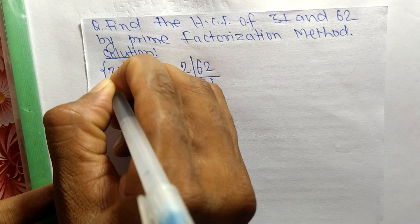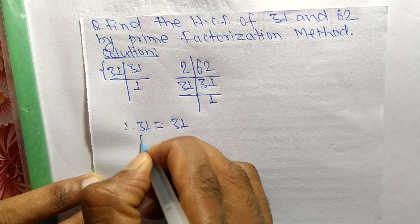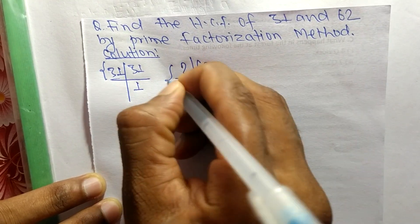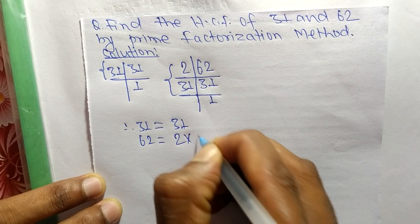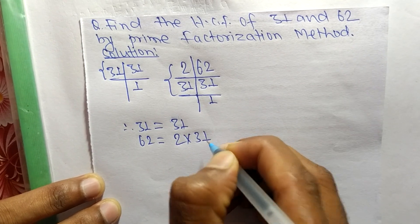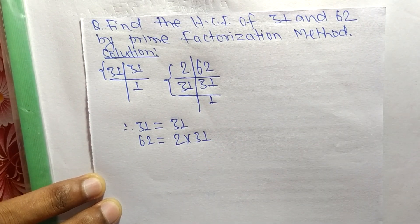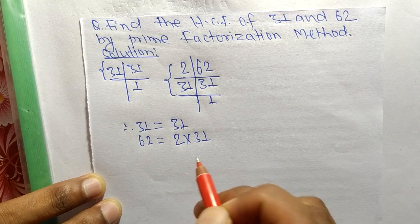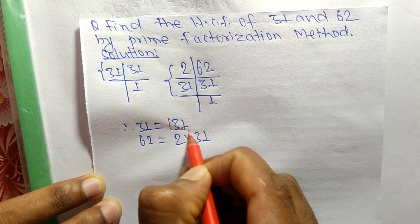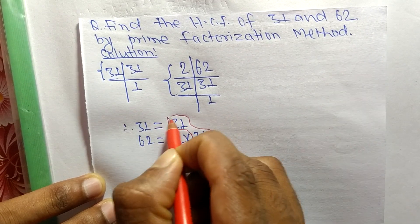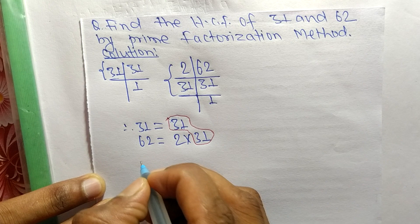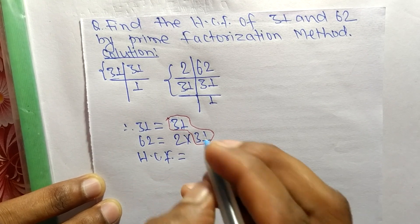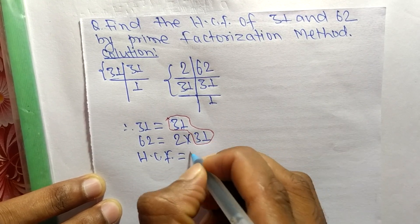From these prime factors, we can write 31 is equal to 31, and 62 is equal to 2 times 31. Now we find the common factors in these prime factors — the common factor here is 31. So HCF is equal to 31.